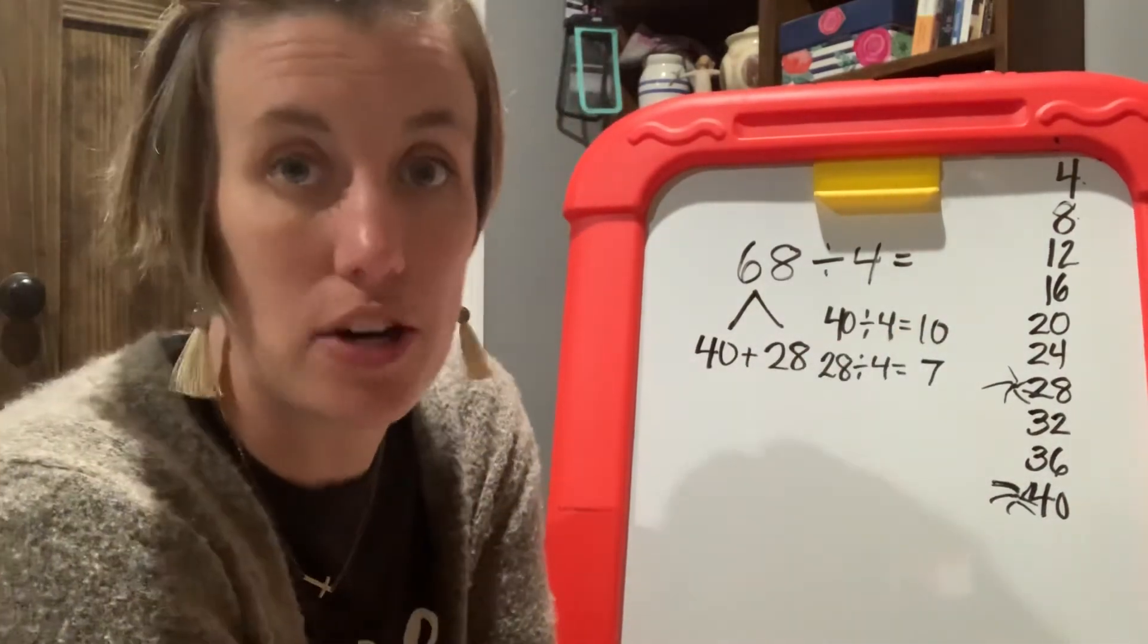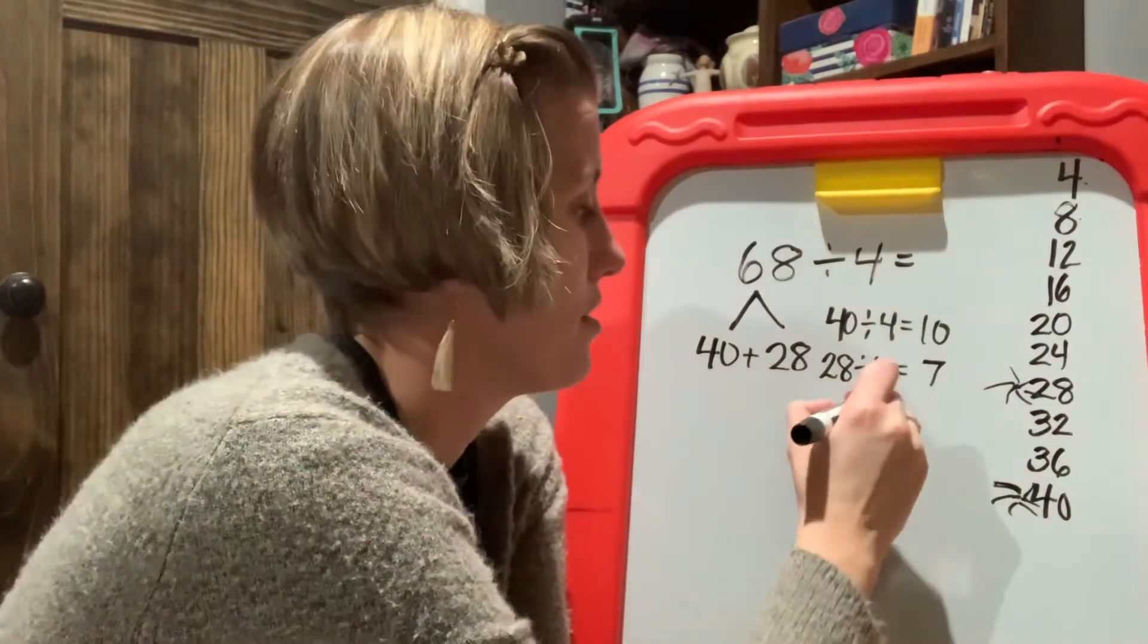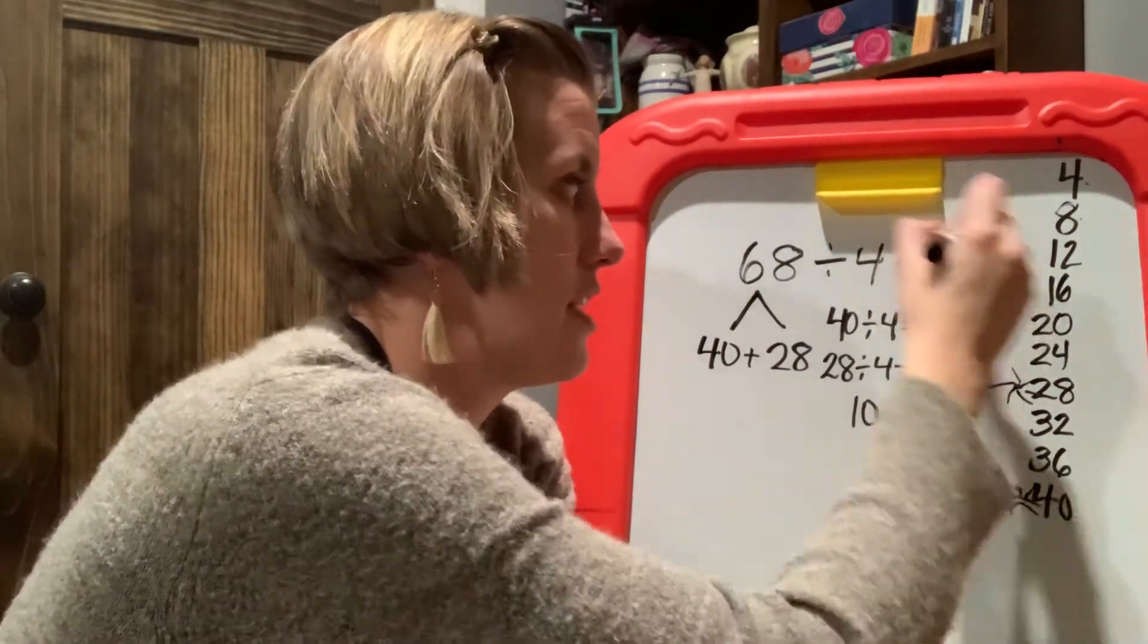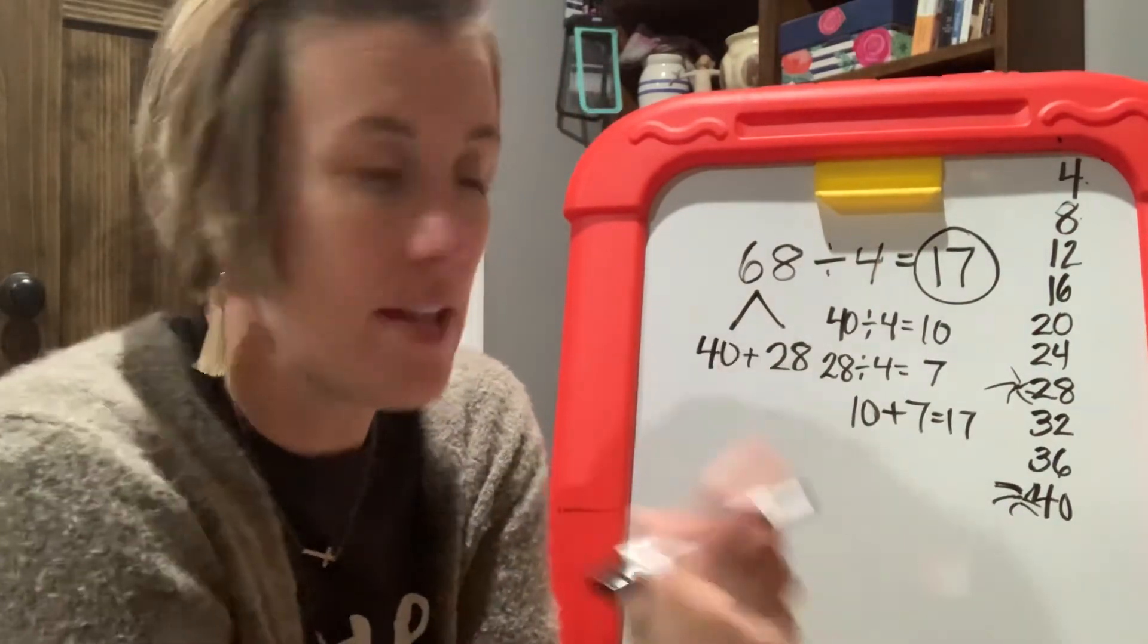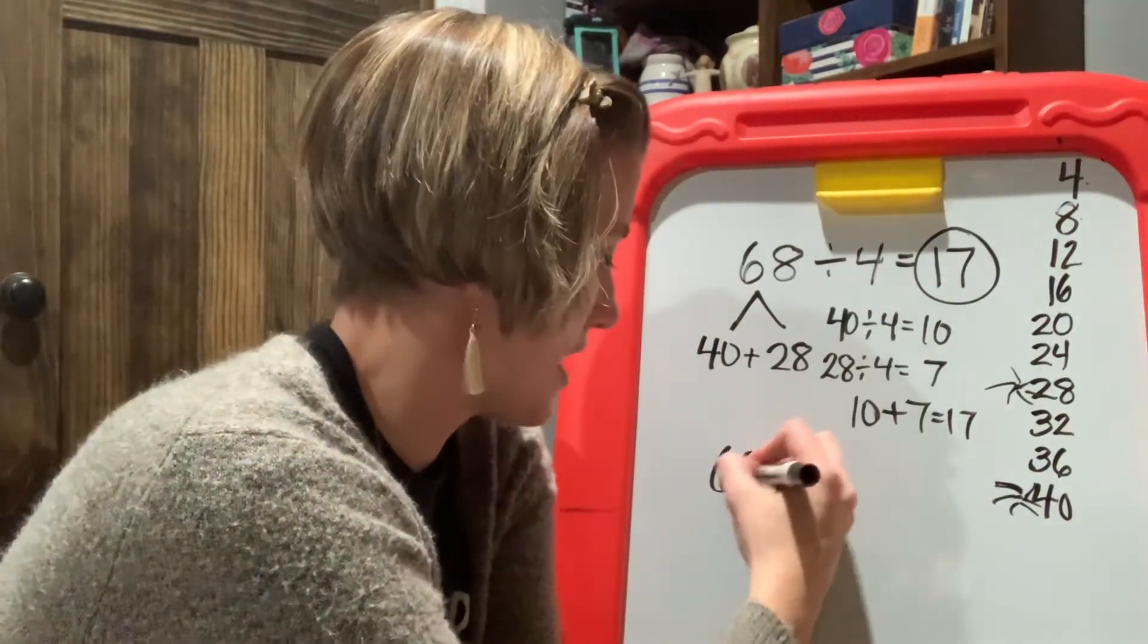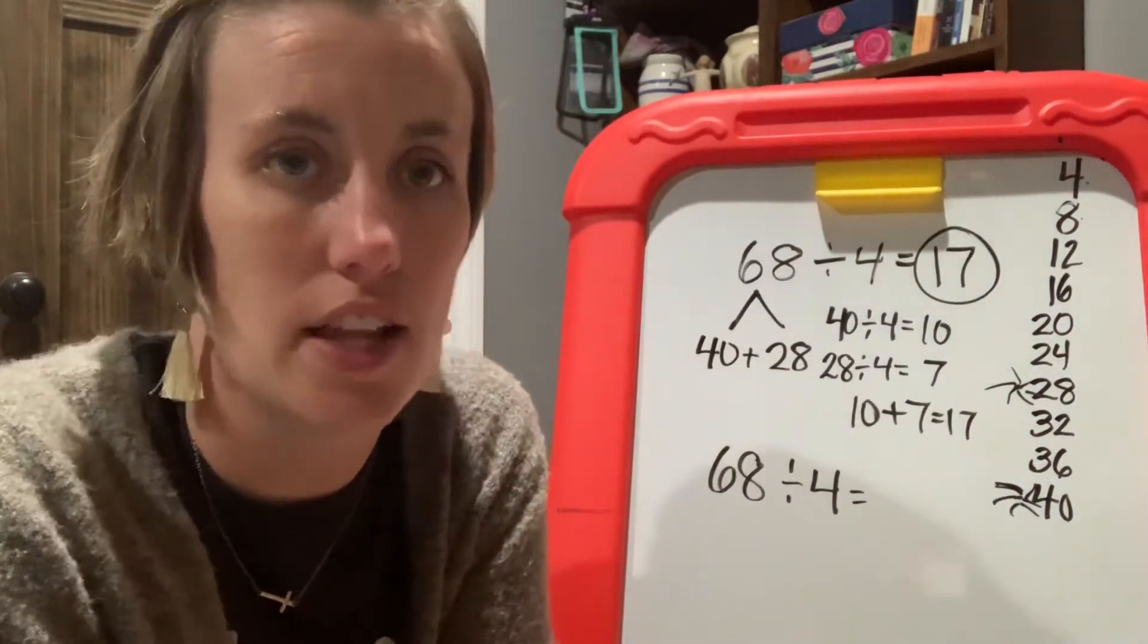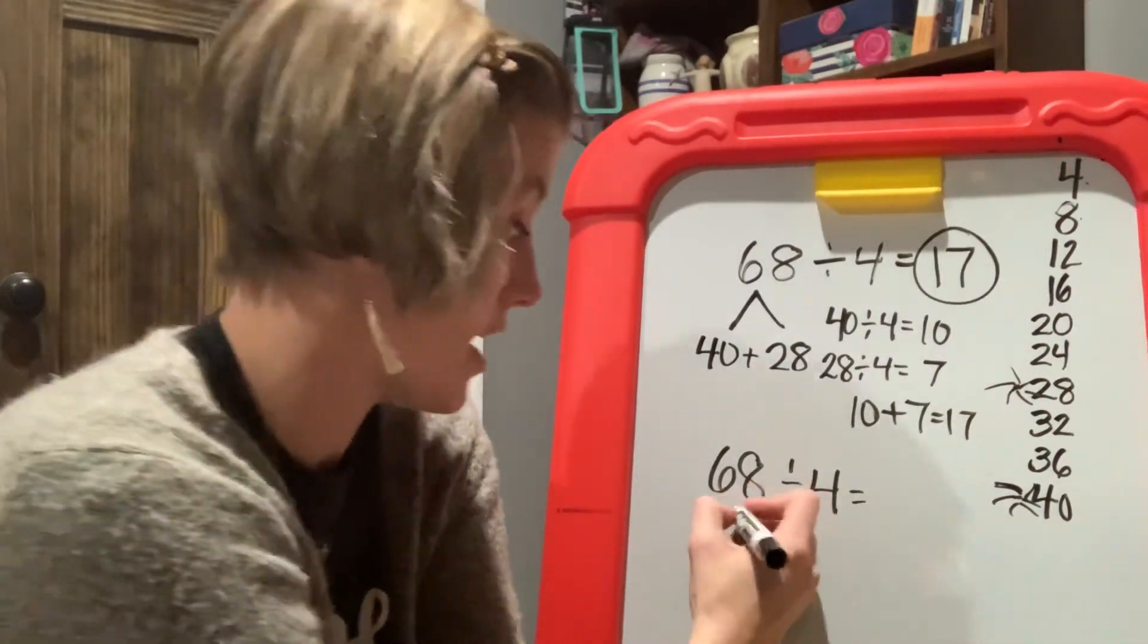Now again, you've got partial products here. So you're going to add those up. 10 plus seven equals 17. 17 is your quotient. Now let's do the same problem, but let's divide it. Let's distribute this 68 in a different way.